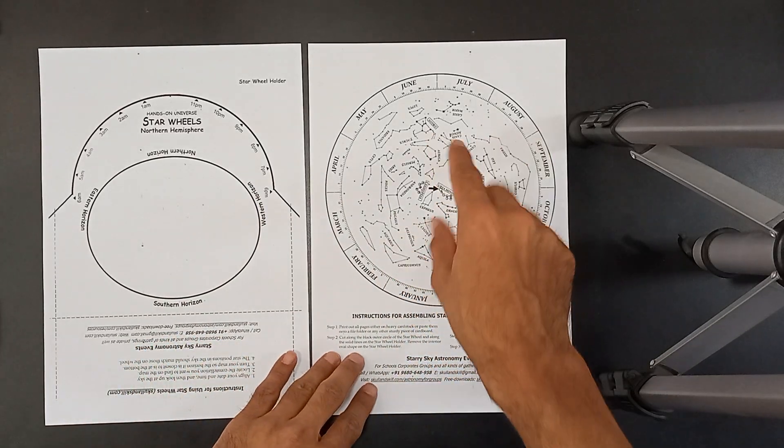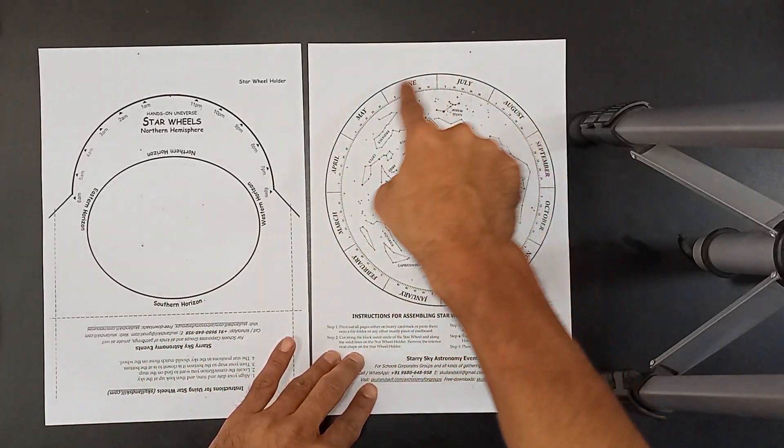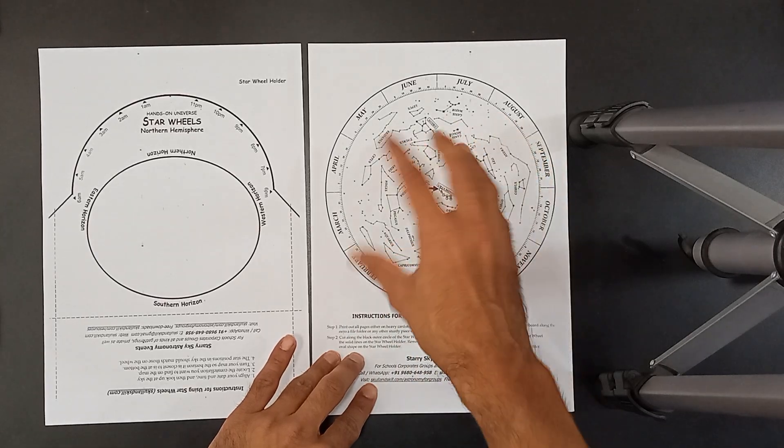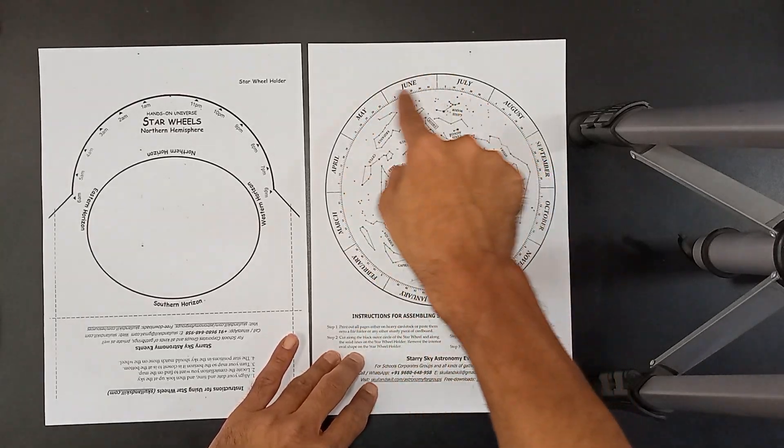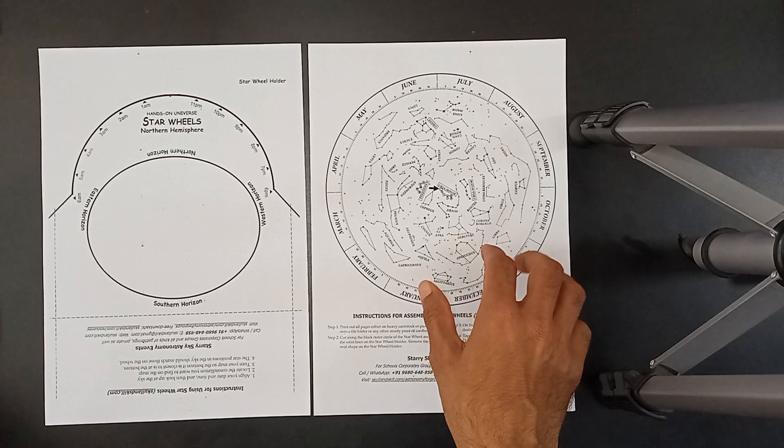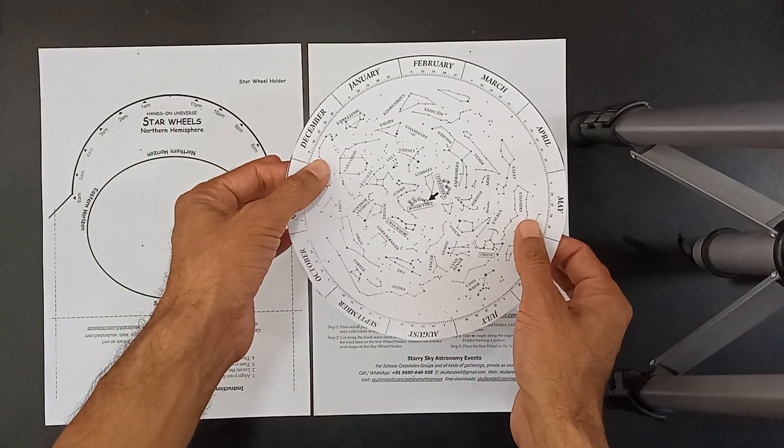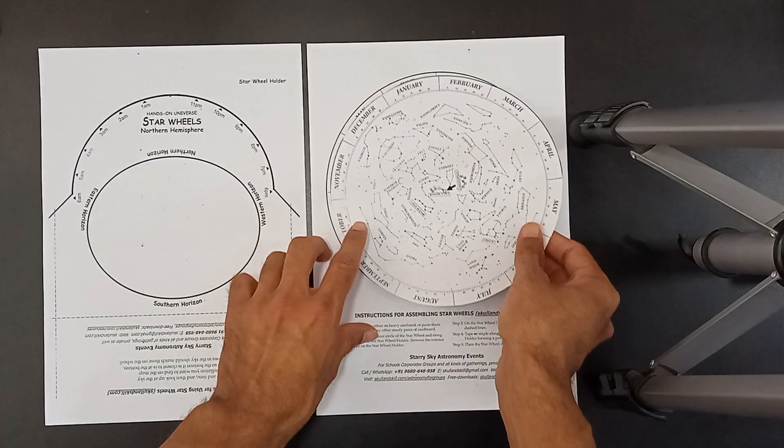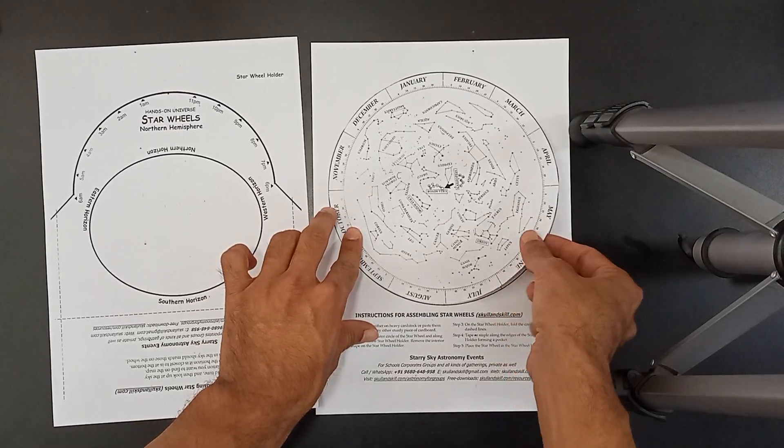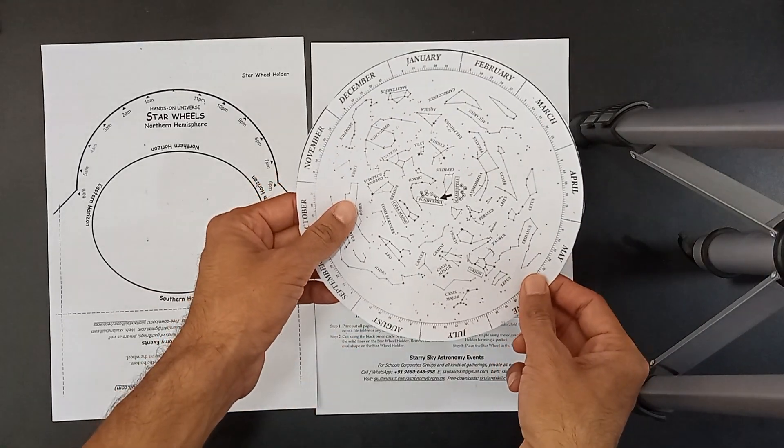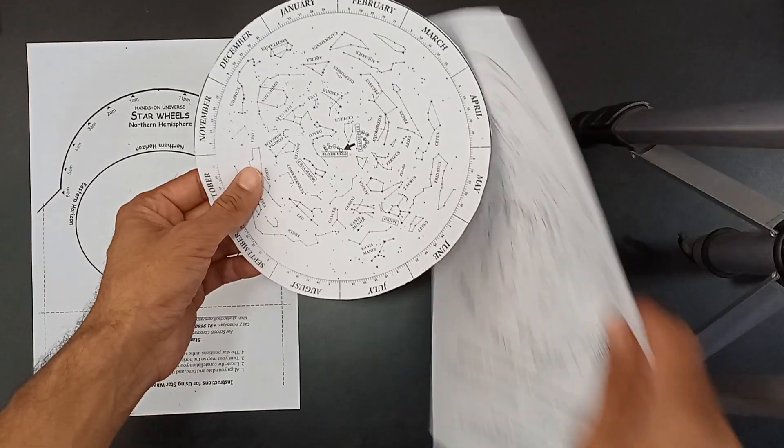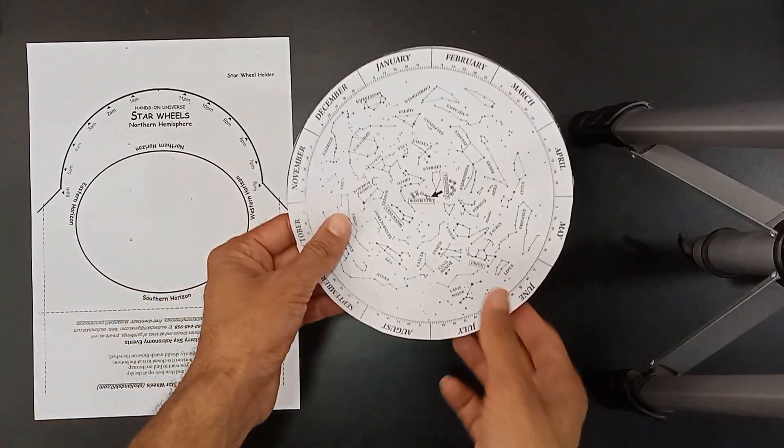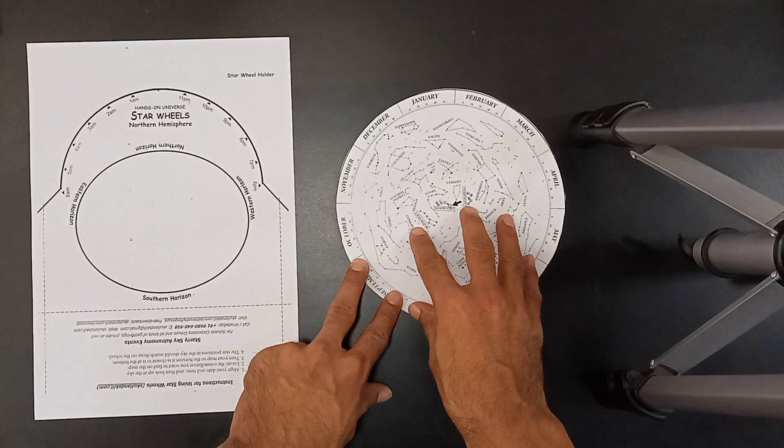What you have to do is, you have to take this sky map circle out from here. You have to cut it out. Once you cut this out, you will have something like this. I have already done that for you. This is the sky map circle which I have taken out from this page. Let's put this aside right now. This is the sky map that you have.